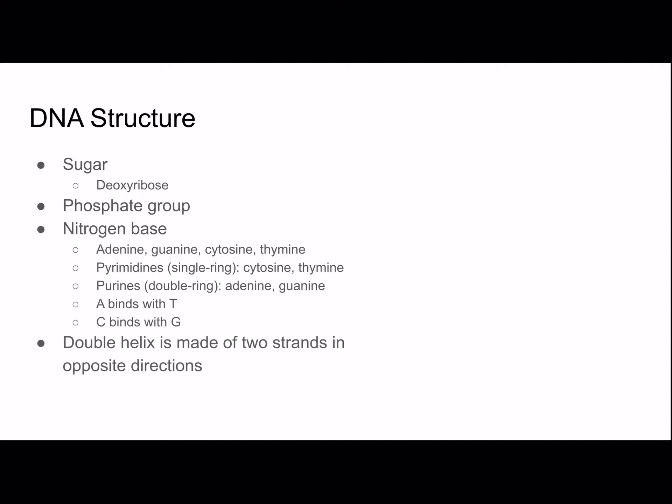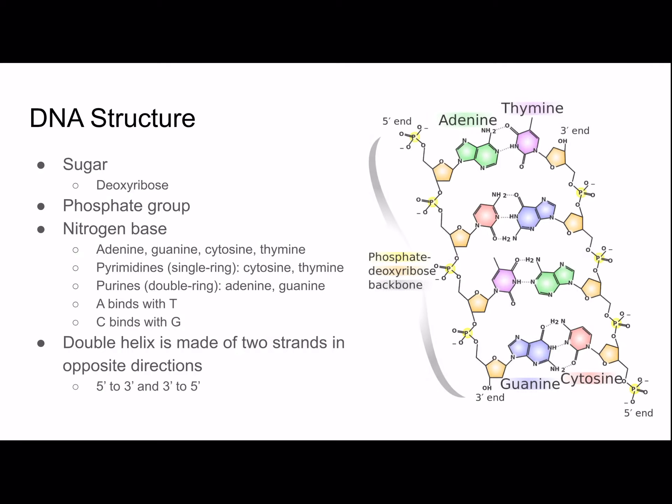The double helix is made of two strands running in opposite directions, which is why they're called anti-parallel — one goes from five prime to three prime, and the other from three prime to five prime. The phosphate group is on the five prime end, which is the fifth carbon of the sugar deoxyribose. On the three prime end, it's the third carbon on the sugar. The strand on the right runs three prime to five prime, so they are opposite each other.